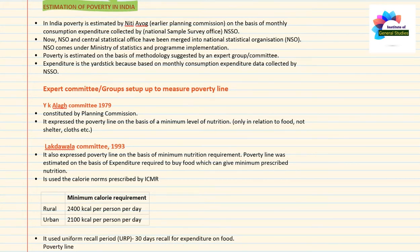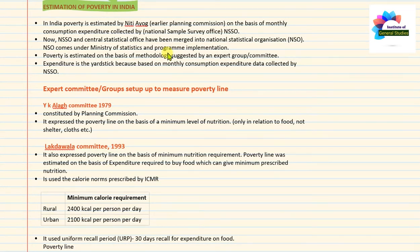Poverty estimation is done by Niti Aayog on the basis of monthly consumption expenditure data collected by the National Sample Survey Office. Niti Aayog is a government policy think tank established after the dissolution of the Planning Commission. The National Sample Survey Office is now known as the National Statistical Organization, NSO, formed by the merger of NSSO and the Central Statistical Office. NSO falls under the Ministry of Statistics and Programme Implementation.